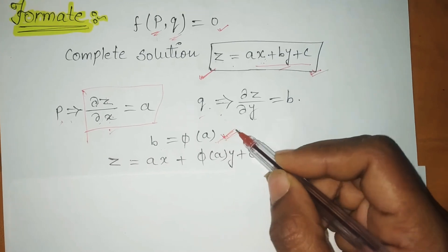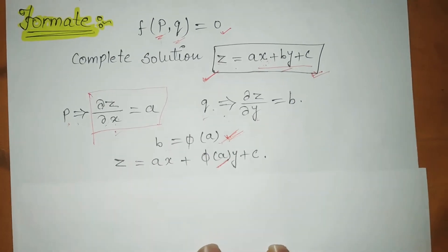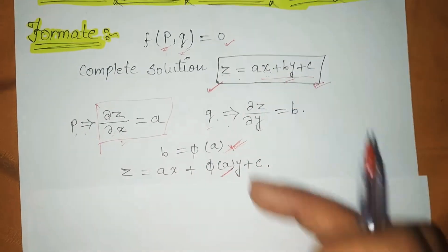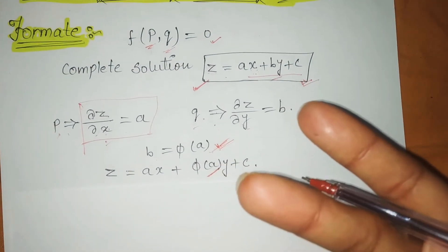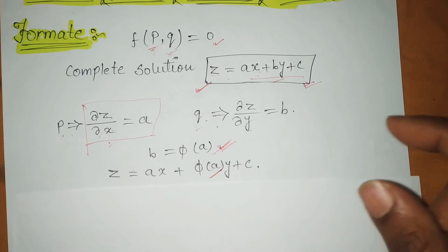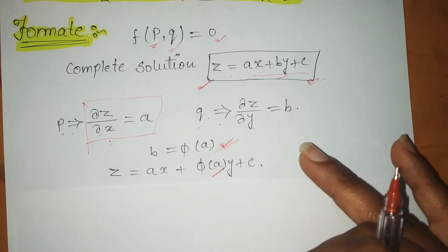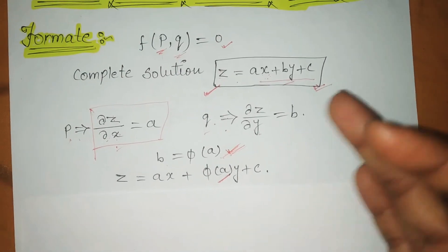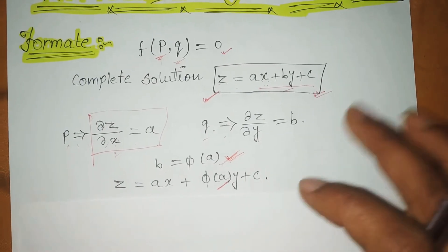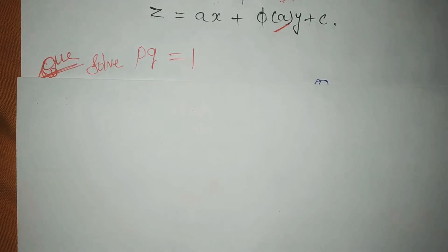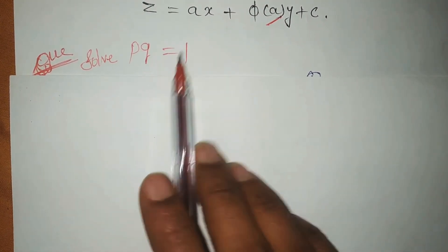The value of φ(a) is then substituted into the equation and you will get the solution. This is the complete format. After this, you will find the general integration and singular point — the question itself will define which one to find. For the first standard form, this is our format. So let's start the question: Solve PQ = 1.